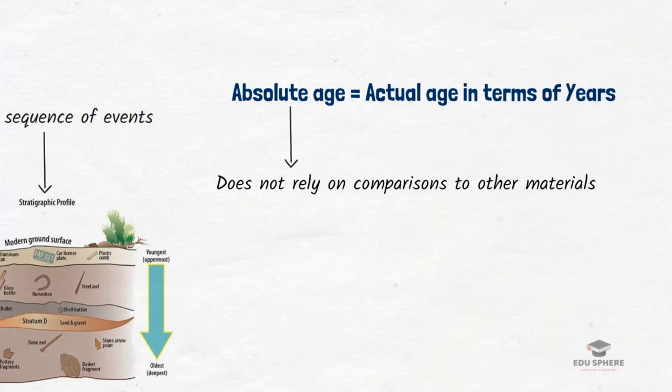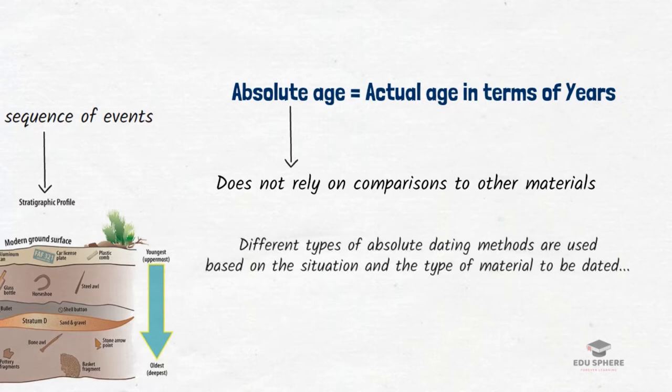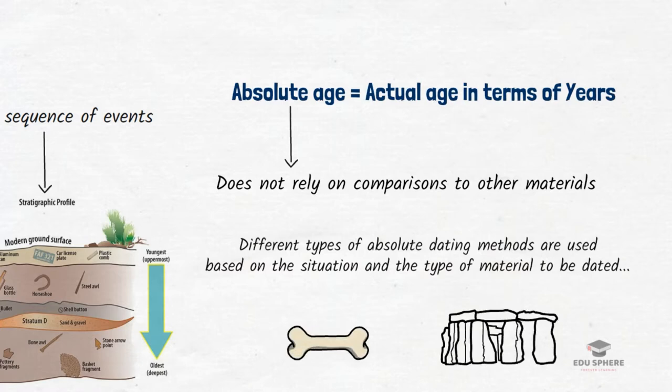Since scientists work with a variety of earth materials like rocks and fossils, there are different types of absolute dating methods. Some are useful in certain situations for certain materials, while the rest are perfect for other jobs. For example, one type of absolute dating may be perfect to figure out age of a bone fossil. Another method of dating might help in determining the age of a rock sample. So, let's have a look at few prominent types of absolute age dating methods.